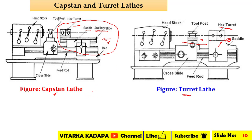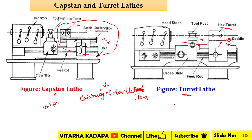The major differences: the auxiliary slide is present in the capstan lathe but not in the turret lathe. Regarding capability of handling jobs — in the capstan lathe, low profile jobs are handled, whereas in the turret lathe, heavier jobs can be mounted. Regarding turret position, in the turret lathe the turret head is mounted directly on the saddle, whereas in the capstan lathe the turret is mounted onto the auxiliary slide and then onto the saddle.